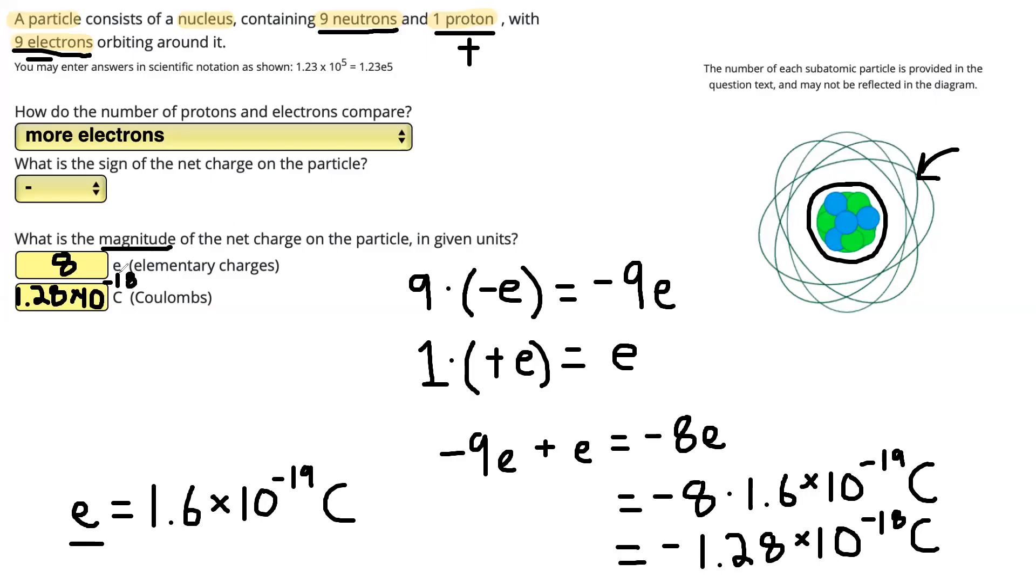Final thing I'll mention is that when you put this into Positive Physics, you're going to be using the scientific notation convention where the letter E represents times 10 to the power of. So you would write this in as 1.28 e negative 18.